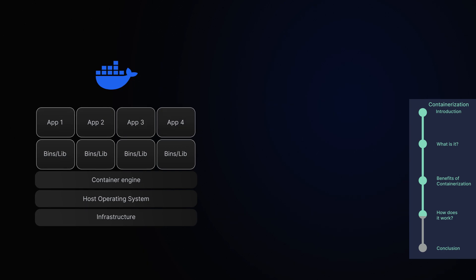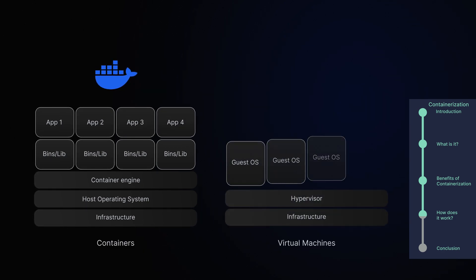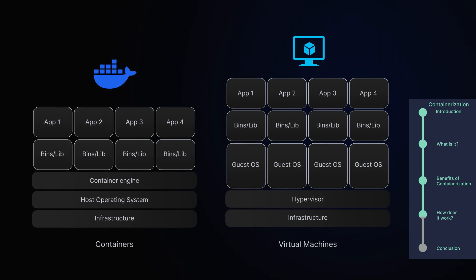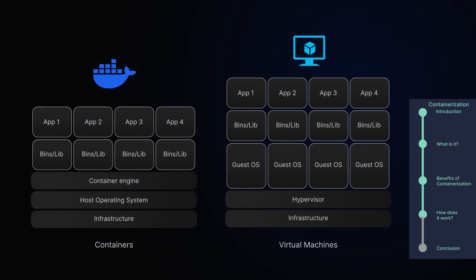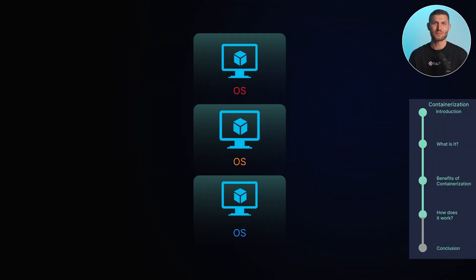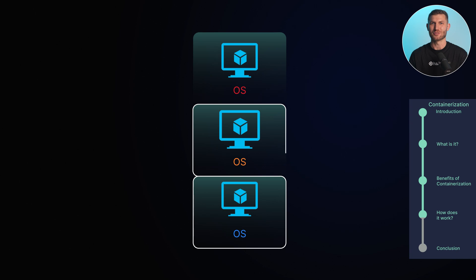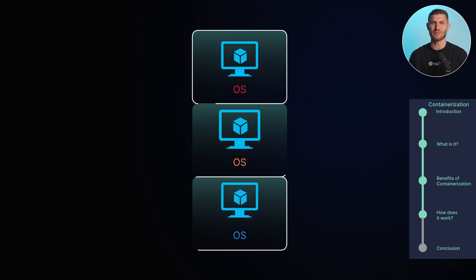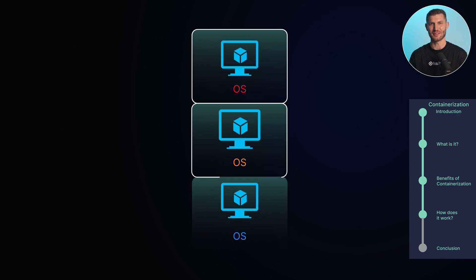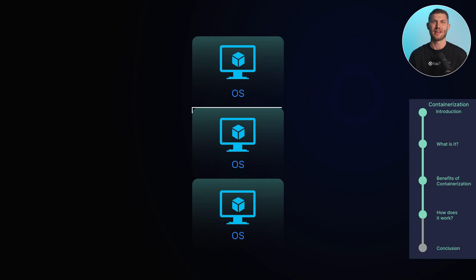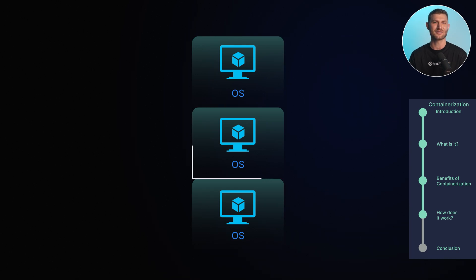Finally, let's compare containerization with virtual machines. While both containerization and virtualization aim to improve resource utilization and application management, they differ in their approach and level of isolation. Virtualization creates multiple virtual machines, or VMs, on a single physical server, each running its own operating system and applications, completely isolated from other VMs. Containerization, on the other hand, creates lightweight containers that share the host operating system, providing a more efficient and scalable solution.